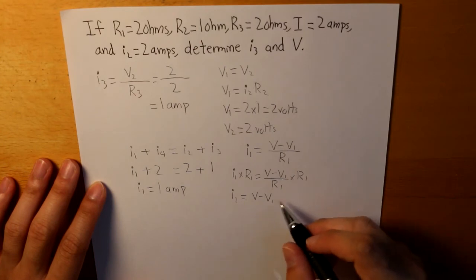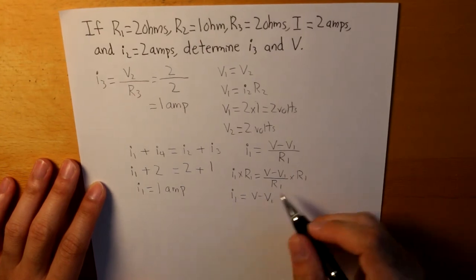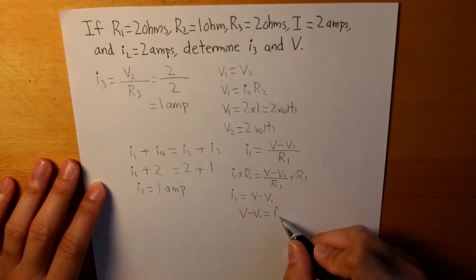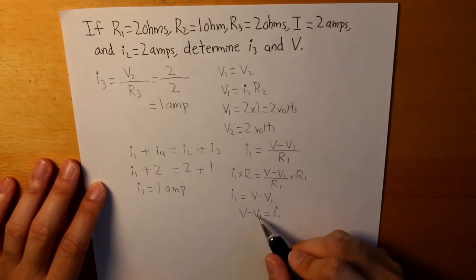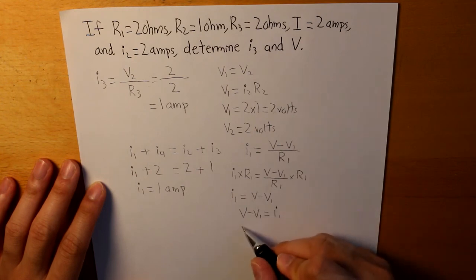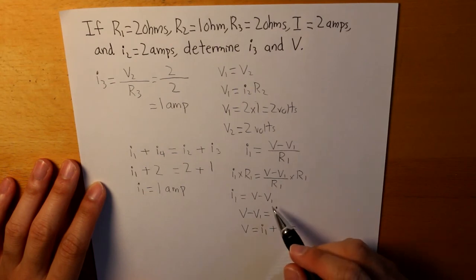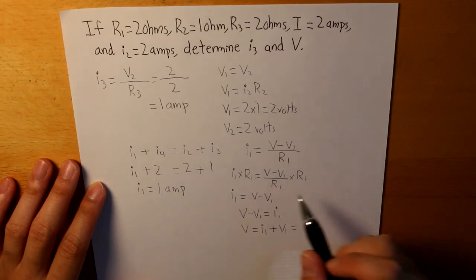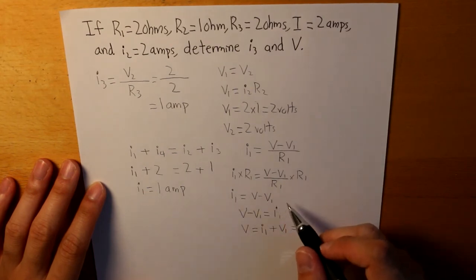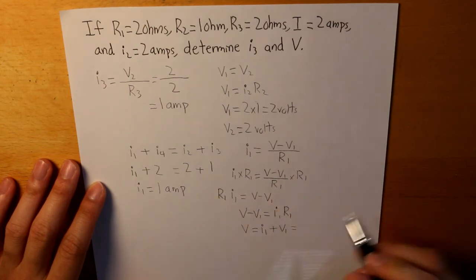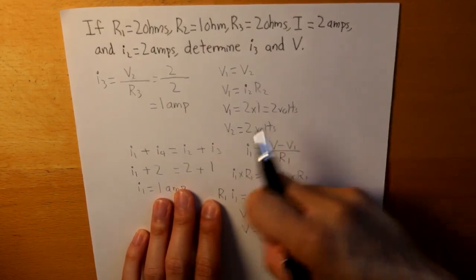And there we get this equation. And then let's switch sides first. So we have this. And then what we do is we add V1 on both sides. And there we get I1 plus V1. Wait a minute. Oh sorry, I forgot to include R1 here. So R1, and then we can just put R1 right here.